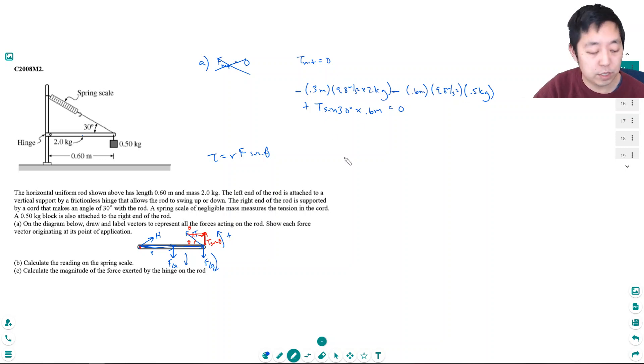Okay. So, if I just simply use my calculator to compute, 0.3 times 9.8 times 2 plus 0.6 times 9.8 times 0.5. All of this was really negative 8.82 plus t sine of 30 is 1 half. So this is 1 half t times 0.6 equals 0. And so this is, 1 half of 0.6 is 0.3. So I have 0.3 t, bring this to the other side as 8.82. And so t is equal to 8.82 divided by 0.3. I know for shorthand I left out the units. But, 29.4 newtons.